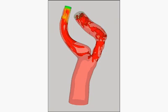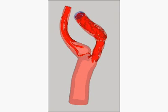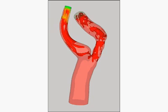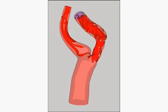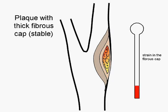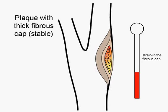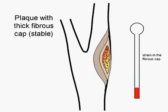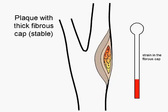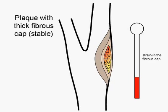Over time, the rapid fluctuations of pressure and strong shearing forces weaken the plaque. It is similar to the wear and tear on a road from the weight of constant traffic passing over it. The forces due to the blood's motion cause less strain on a thick fibrous cap than on a thin one.